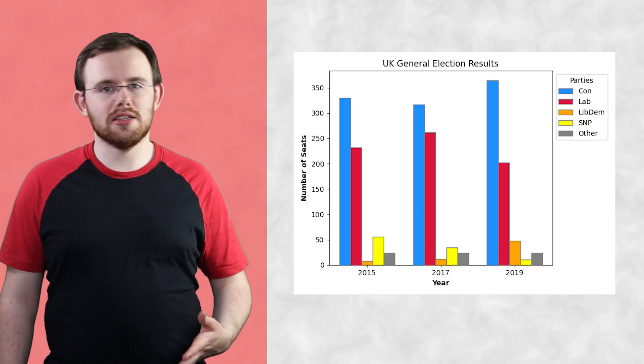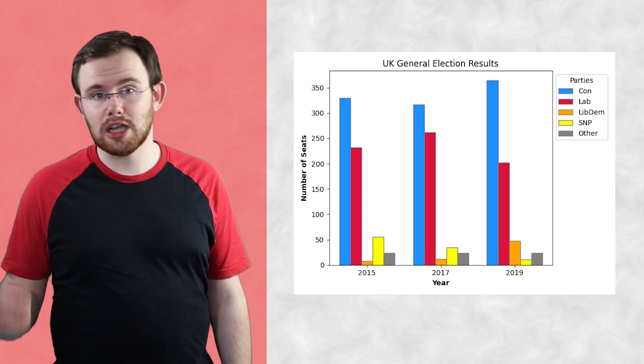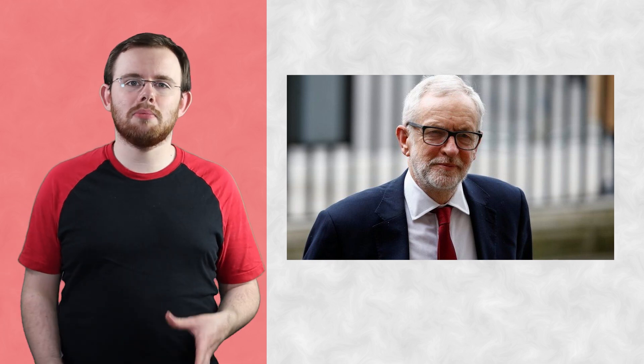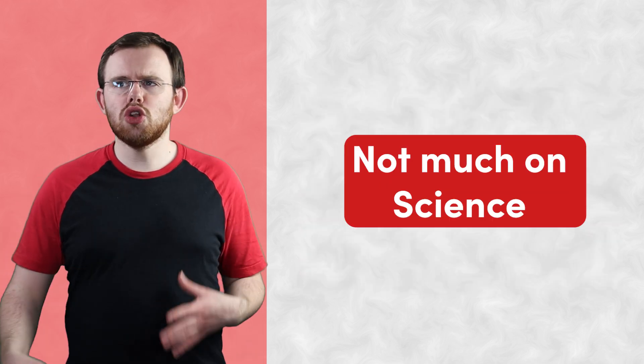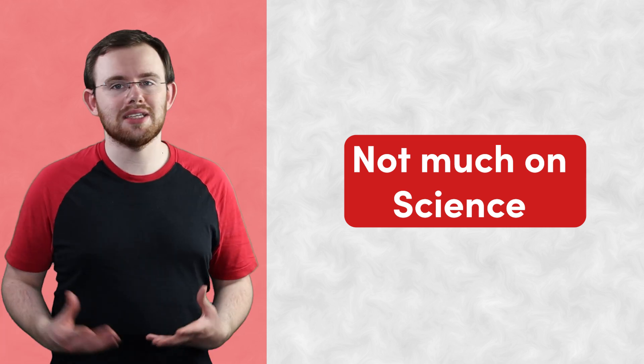And that leaves us with our final party: the Labour Party, led by Sir Keir Starmer. If I had to describe the Labour manifesto in a single phrase, it would be 'careful but hopeful.' The Labour Party hasn't been in power in Westminster since 2010, suffering a series of electoral defeats including the 2019 Conservative majority. Since then, Jeremy Corbyn has been replaced by Sir Keir Starmer, and the party has adopted a position more similar to Tony Blair's New Labour from the 1990s — a more centre-left party. Most of the Labour manifesto focuses on delivering for working families in areas such as housing, healthcare and economic growth. There's not really much emphasis on science or research and development in the manifesto.